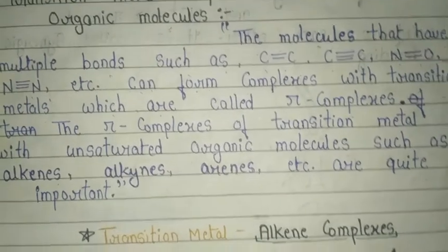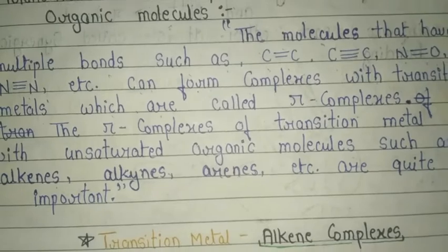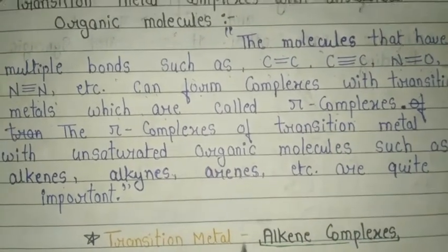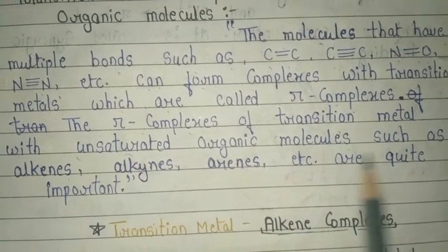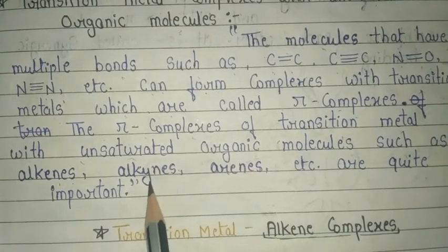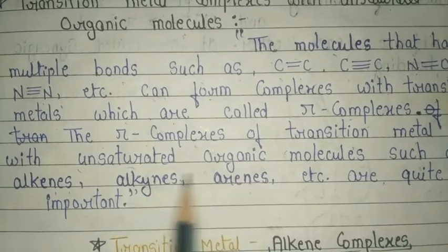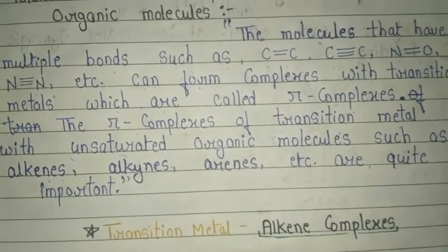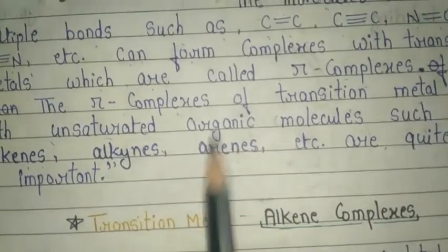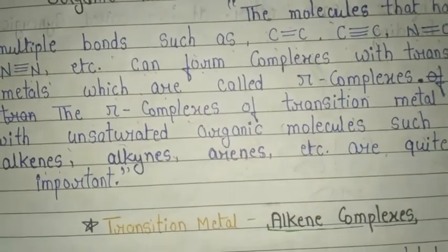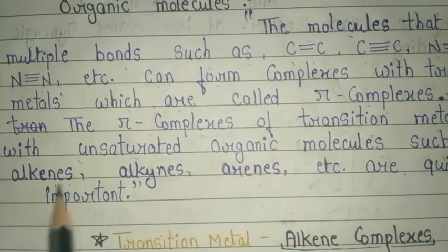Alkynes and arenes form complexes with transition metals, which we call pi complexes. Pi complexes are transition metal complexes with unsaturated organic molecules such as alkenes, alkynes, arenes, etc., and are quite important. The double bonds and triple bonds — the multiple bonds — combine with transition metals to form pi complexes.